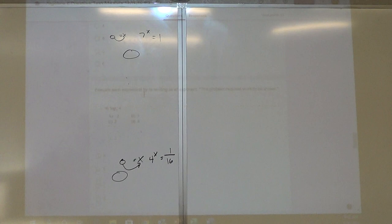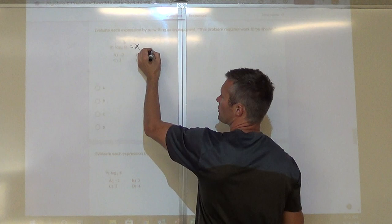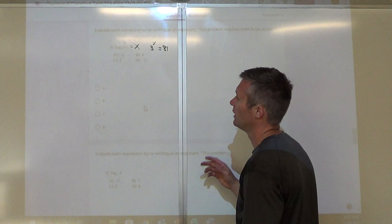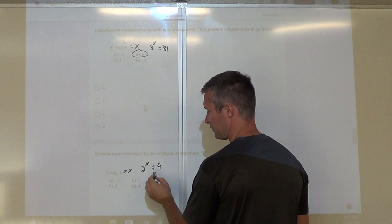Next one: what does this equal? Three to what power equals 81? Three to the fourth power. Then: two to what power equals 4? That's two to the second power, so the answer is C.